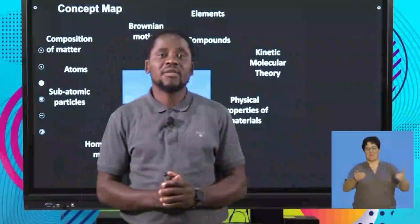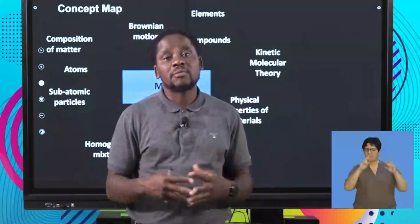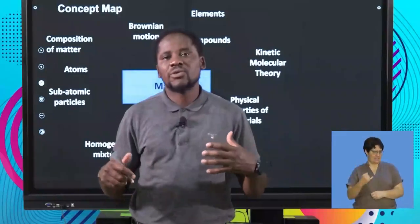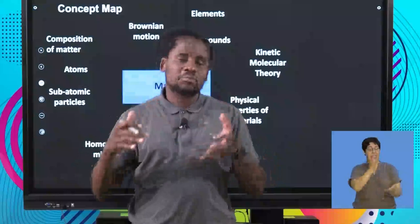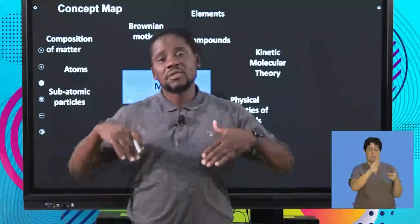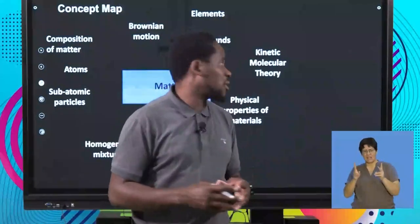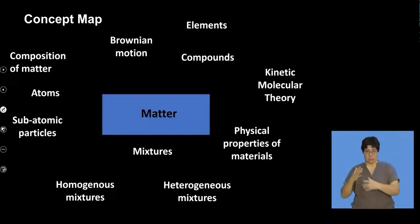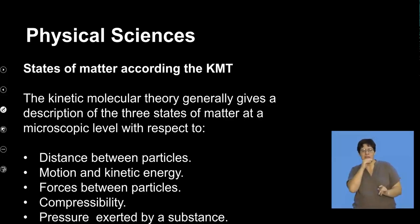Welcome back to our third and final segment. We're still exploring the kinetic molecular theory, but we also want to link the evidence brought forward by diffusion as well as Brownian motion in terms of describing the particle nature of matter. The kinetic molecular theory as a model gives us a description of the three states of matter at a microscopic level.